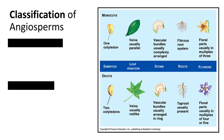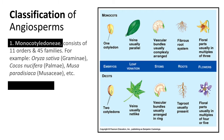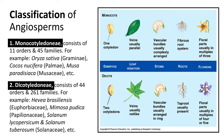Angiosperms can be divided into two major classes based on the number of embryonic leaves. The first is Monocotyledon — plants that have one embryonic leaf — consisting of 11 orders and 45 families; examples include Oryza sativa, Cocos nucifera, and Musa paradisiaca. The second is Dicotyledon — plants with two embryonic leaves — consisting of 44 orders and 261 families; examples include Hevea brasiliensis, Mimosa pudica, Solanum lycopersicum, and Solanum tuberosum. The diagram on screen describes the main characteristics and differences between these two classes.